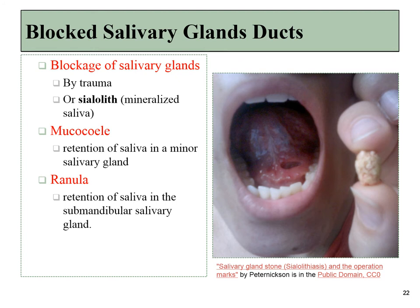Once the minerals precipitate, they can form a nucleus — not like the nucleus found in the center of a cell or an atom, but the beginning of a large rock. A few atoms that have precipitated together can help others leave solution and become part of that tiny little rock. Over time, it might become big enough to actually block off one of the ducts of a salivary gland.